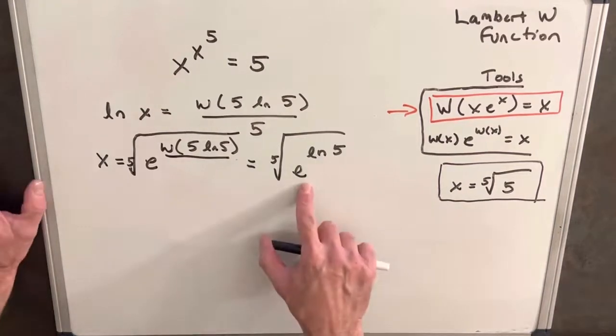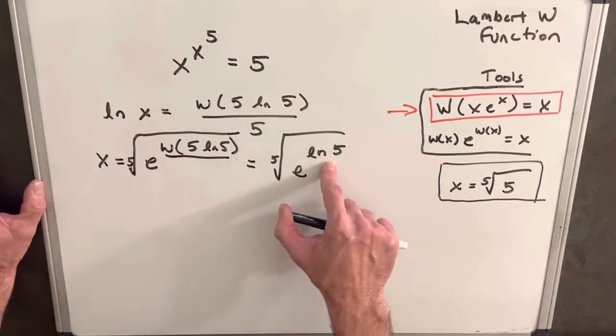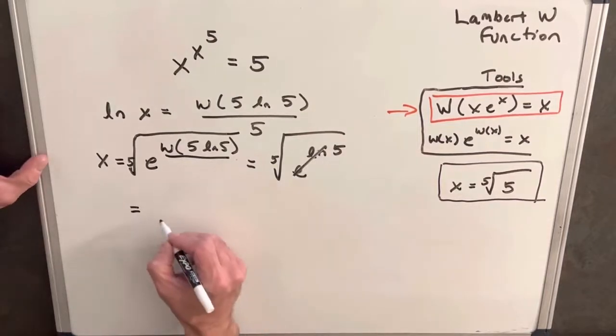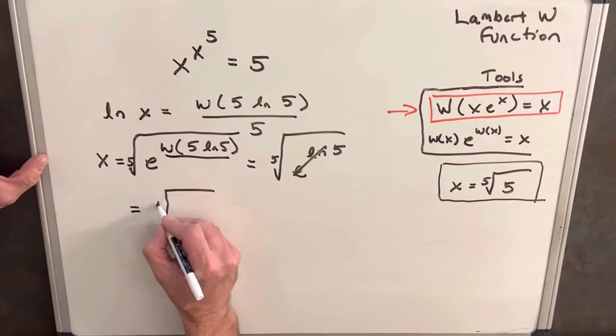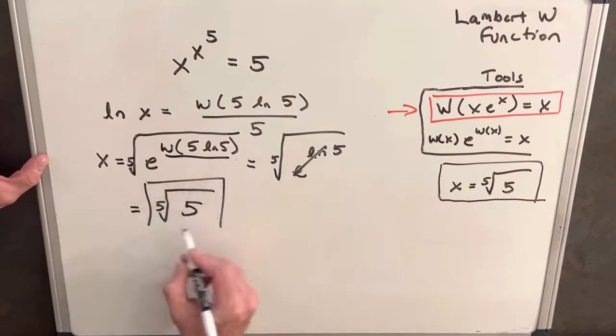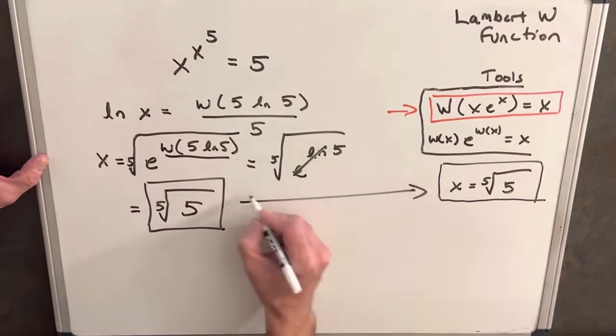So now we're writing this inside the radical, we have e to the ln five. But then we can just cancel this here, and we end up with our final solution which is going to be the fifth root of five. And we find that that's exactly what we wanted right here.